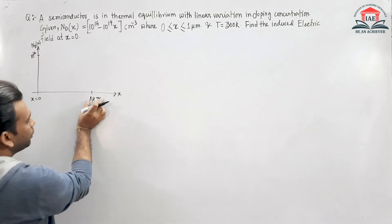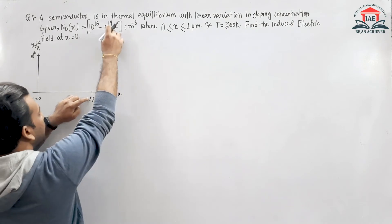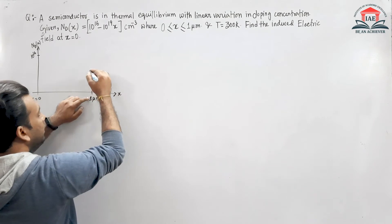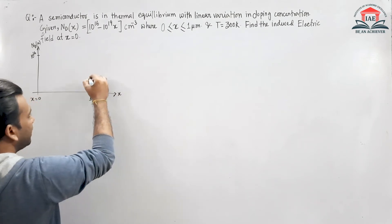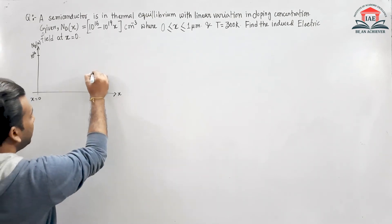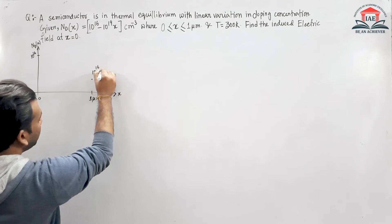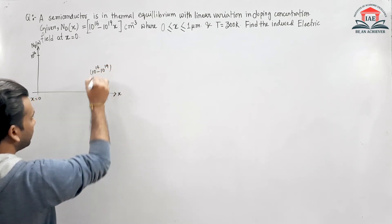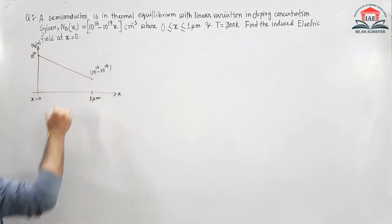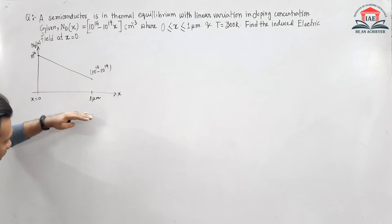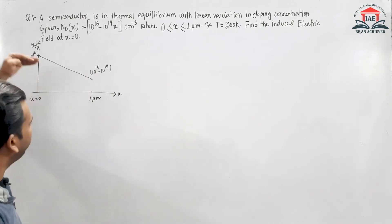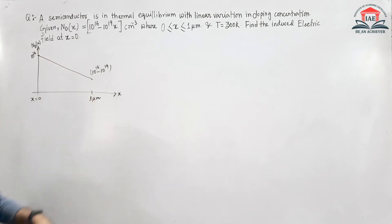Similarly, if we put x = 1 micrometer in this equation, the value will be 10^16 - 10^19. So the linear variation looks like this — it may go below the origin to a negative value. We are considering the nature of the variation, not exact values.